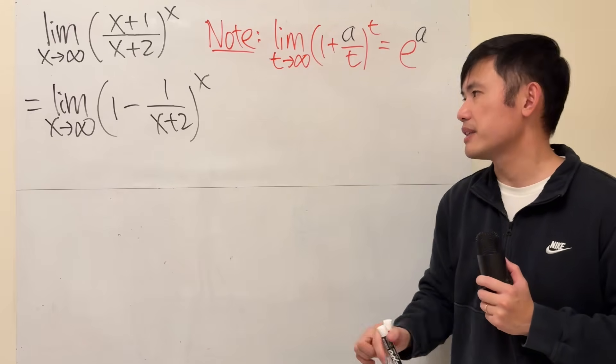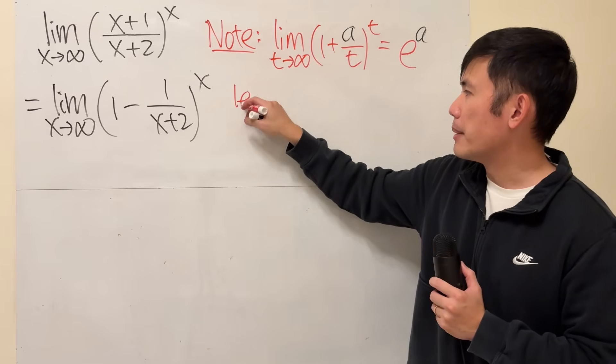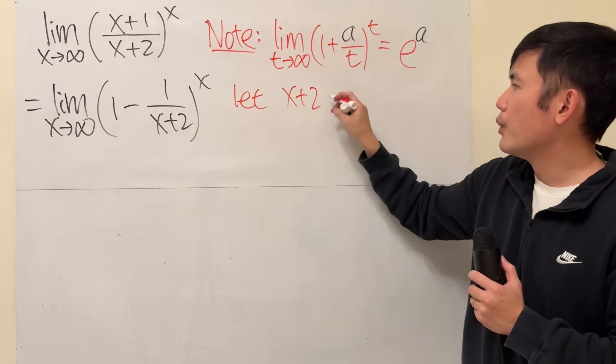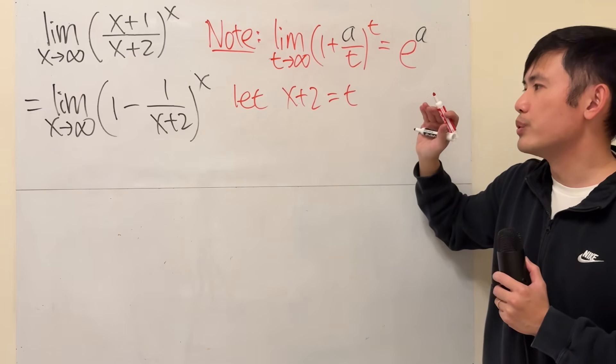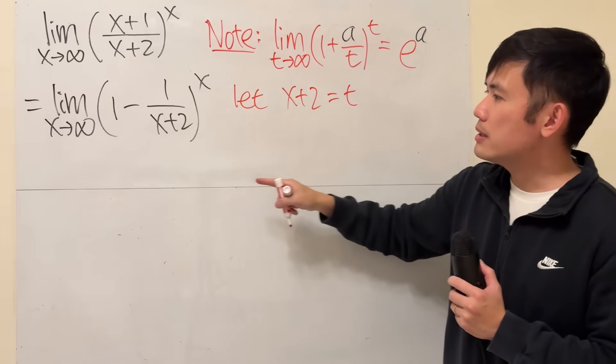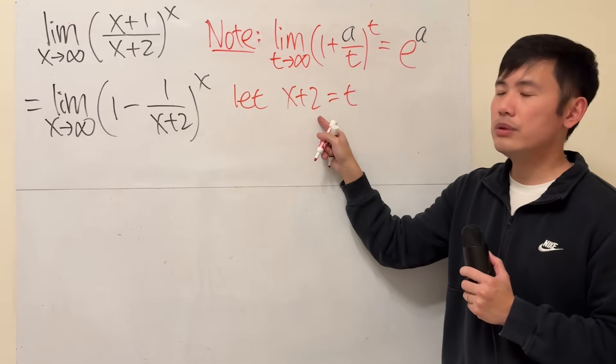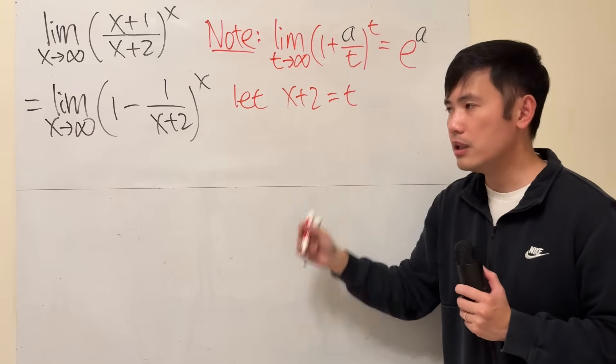Don't worry, it's just a small fix. Here we can do a substitution. Let this thing, which is x plus 2, we are going to say that's equal to t. And notice, when x is approaching infinity, infinity plus 2, that will also give you infinity for t.